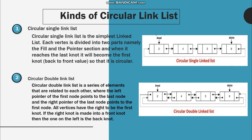The circular double linked list is a series of elements related to each other where the left pointer of the first node points to the last node and the right pointer of the last node points to the first node. All vertices have the right to be the first node. If the right node is submitted as a front node, then the one on the left is the back node.